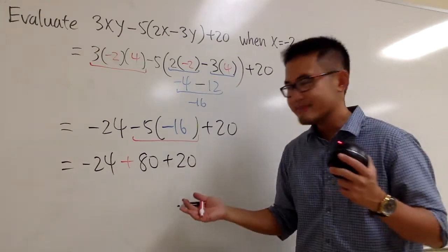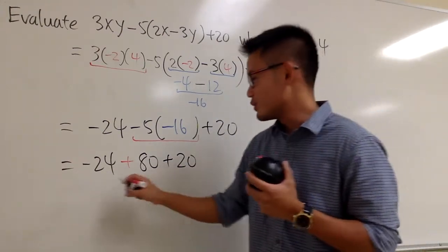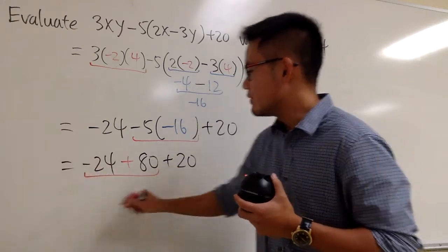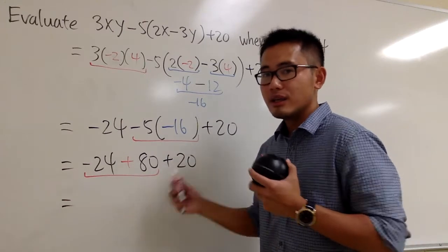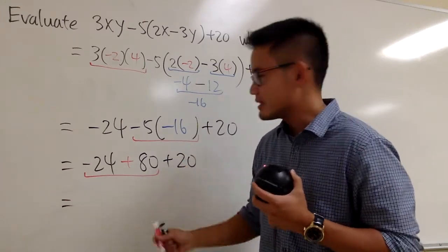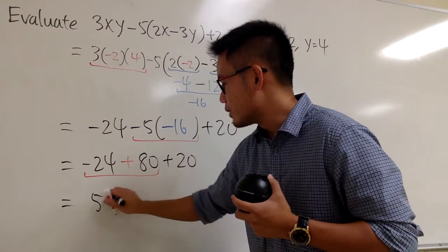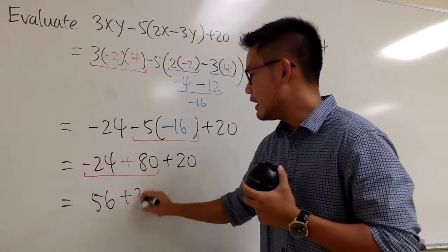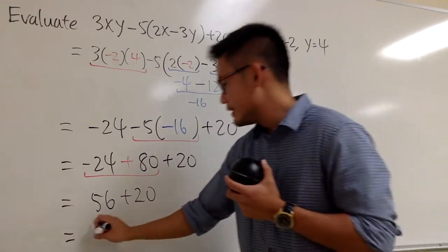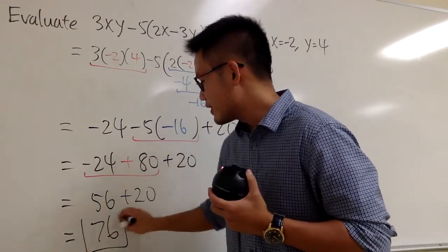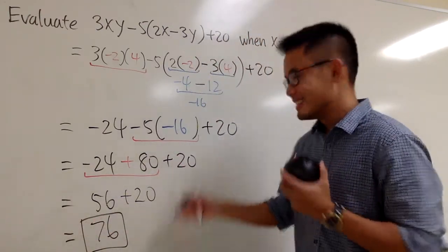And now what? It's just adding, so we just do it from left to right. So we just do this first. And we see negative 24 plus 80 is positive 56, so that's pretty much right here. And then you add a 20 after that. 56 plus 20, we have what? 76. And this right here will be the final answer. And that's it.